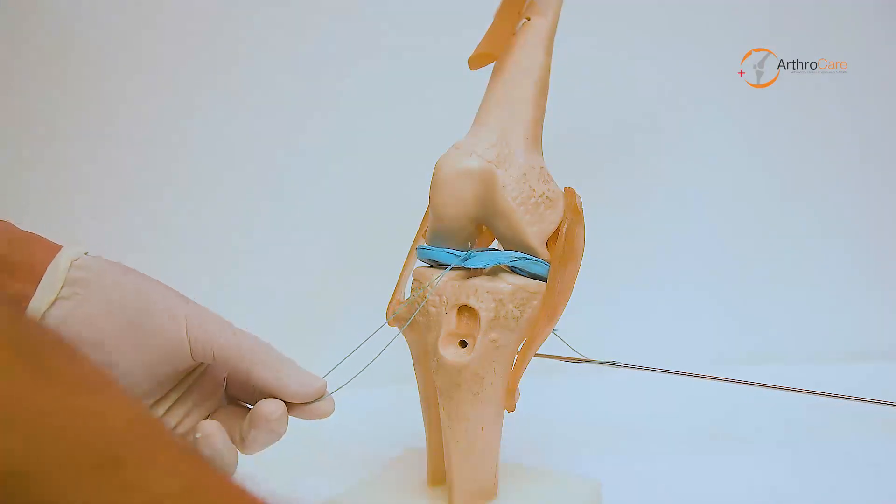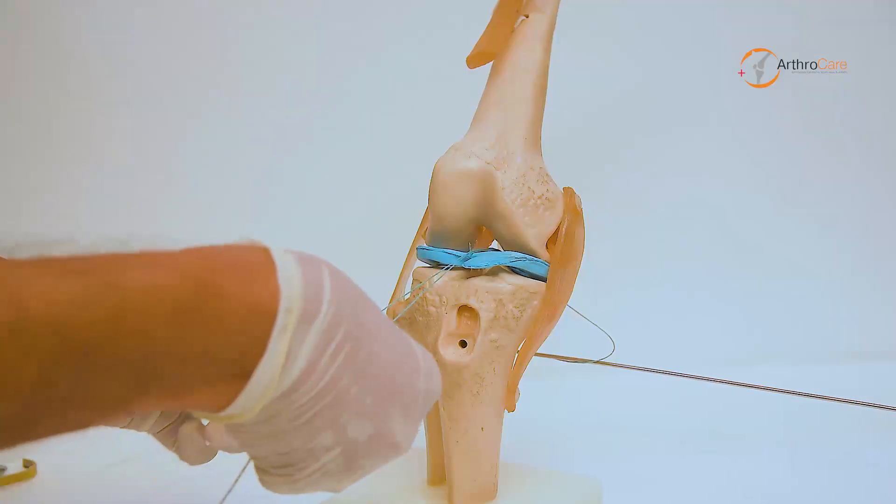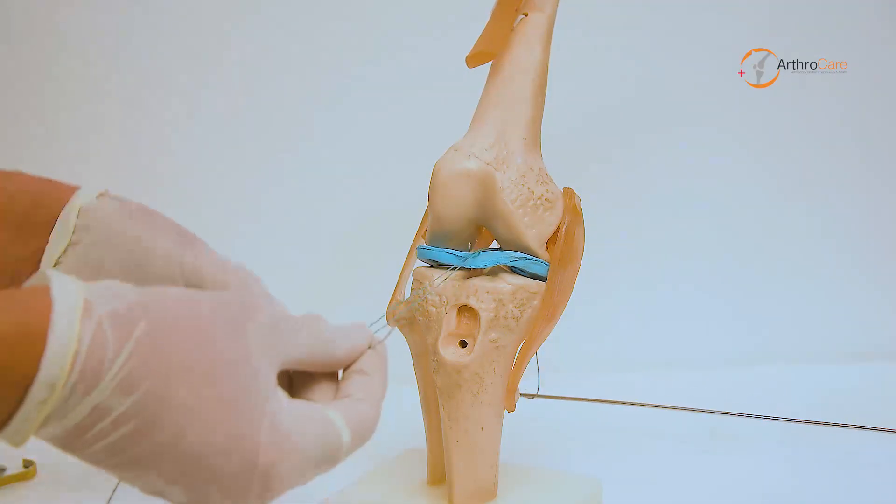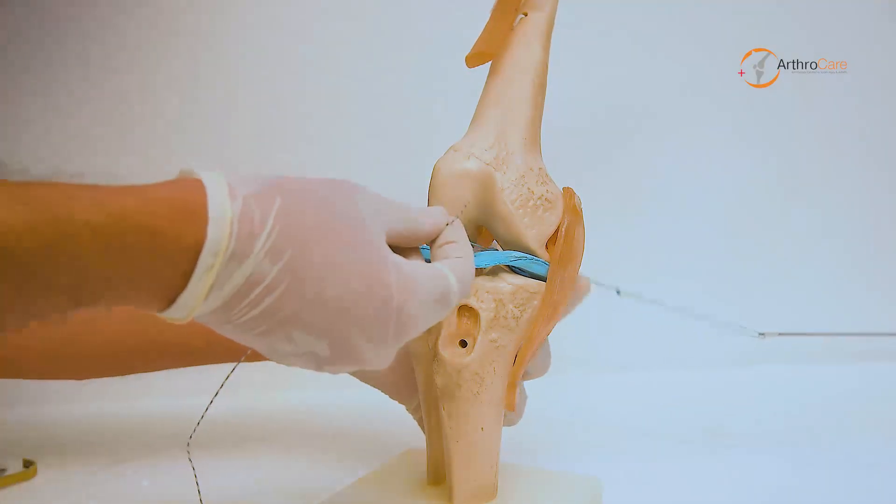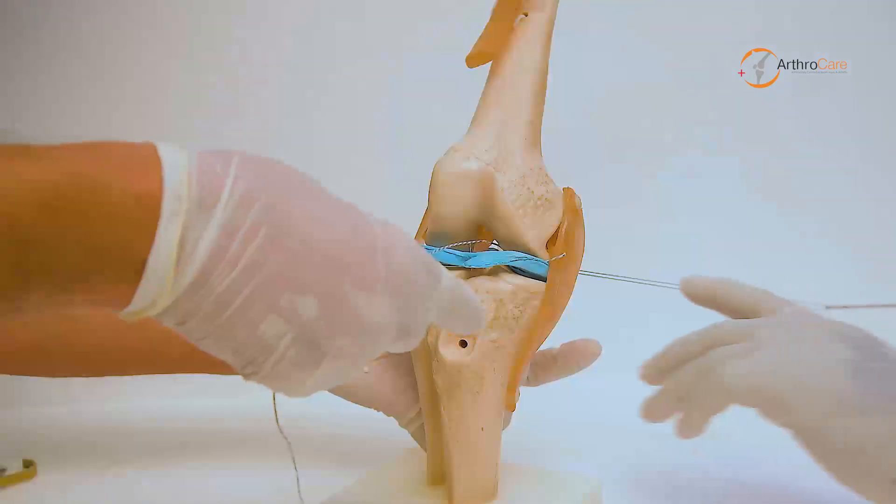Through this loop, two fiber wires are pulled and brought back at the posteromedial portal.